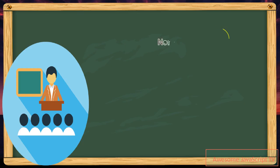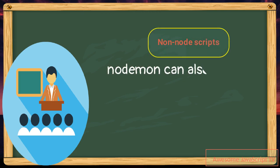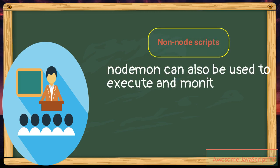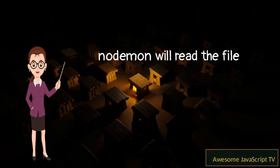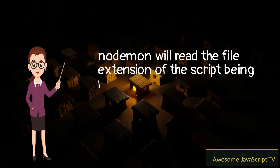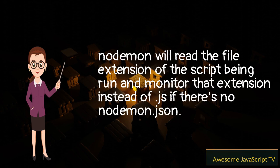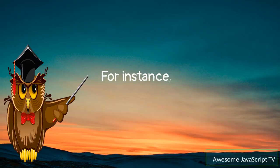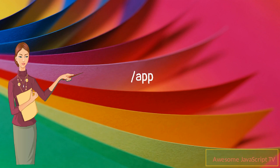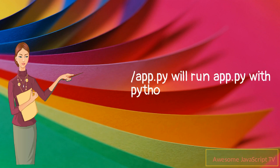NodeMond can also be used to execute and monitor other programs. NodeMond will read the file extension of the script being run and monitor that extension instead of .js if there's no nodemon.json. For instance, nodemon exec python -d ./app.py will run app.py with Python in verbose mode.